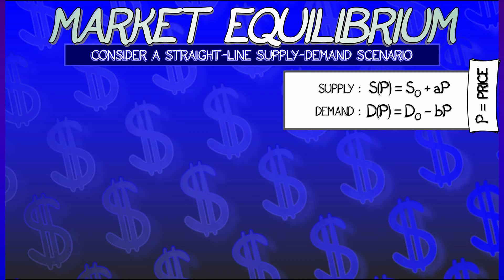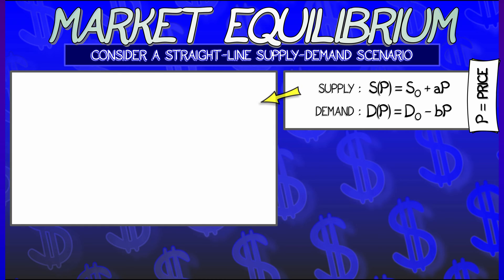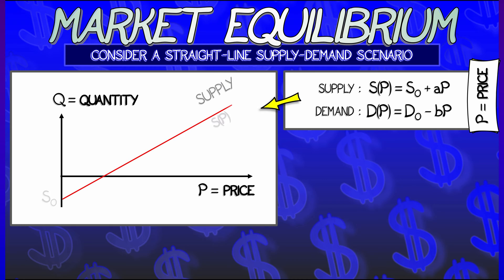There is a corresponding demand curve, which we'll also model as a straight line, d-naught minus b times p. Now, these are set up so that the supply line has positive slope, the demand line has negative slope, and that makes sense for economic reasons.